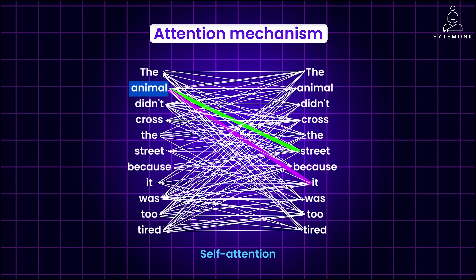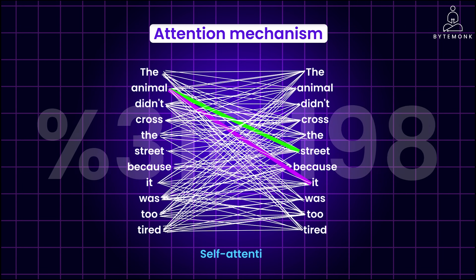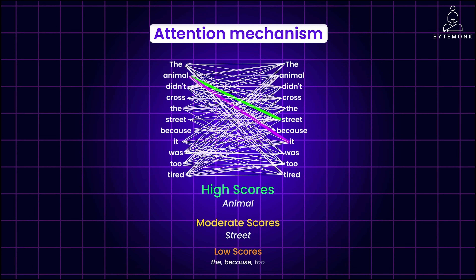So when the model is trying to figure out what the word 'it' refers to, it uses attention. It calculates an attention score between 'it' and every other word in the sentence. For example, it will give a high score to the word 'animal' because 'it' likely refers to the animal. It might assign a moderate score to 'street' because the animal can cross streets, and assign low scores to words like 'the,' 'because,' and 'to,' because these are less relevant. Finally, the model creates a new representation of the word 'it' that is a weighted combination based on these attention scores.